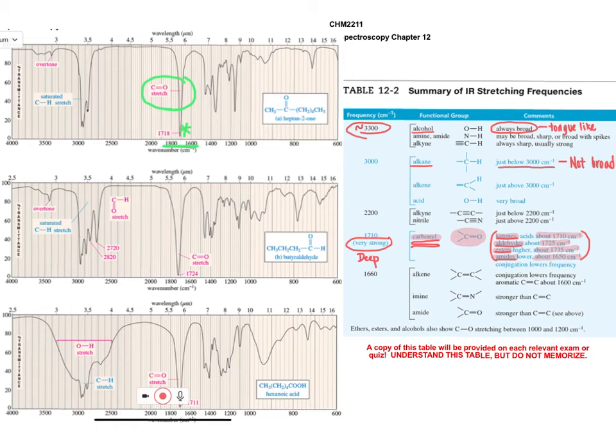And that is actually what this corresponds to because the actual compound is heptan-2-one, this ketone with seven carbons and the ketone group at carbon number two of the chain.